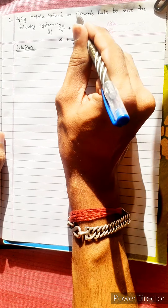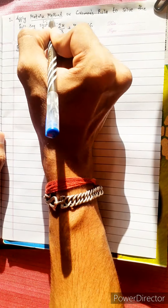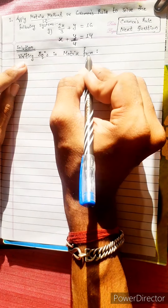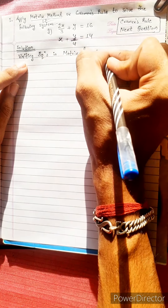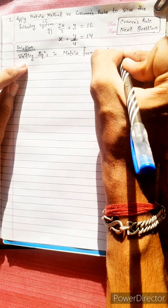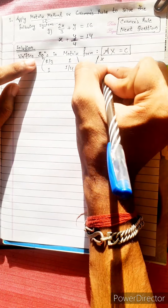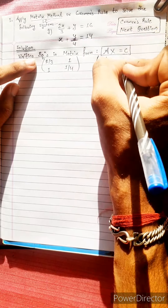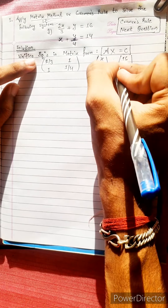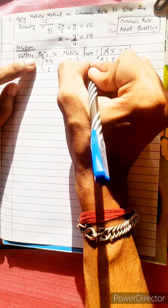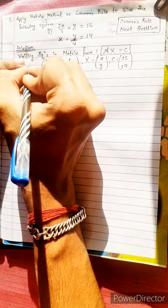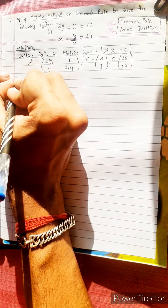We will apply the matrix method. Writing equations in matrix form: Ax equals C. The coefficient matrix A is 2-by-3 and 1-by-4. The variable matrix x contains y and x values. C equals 16 and 14.